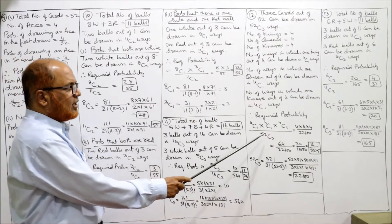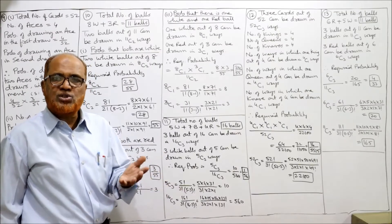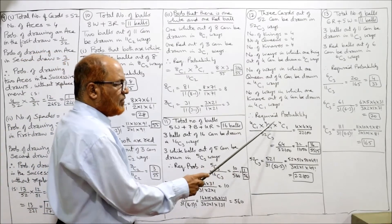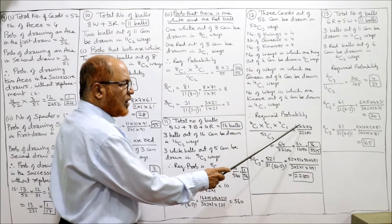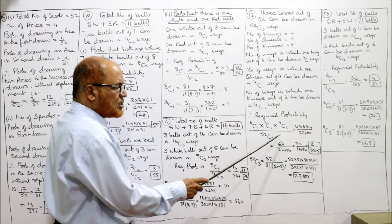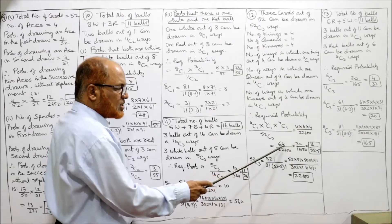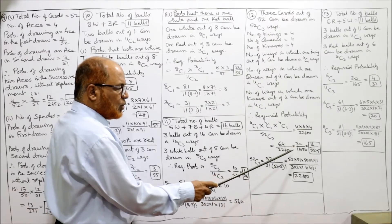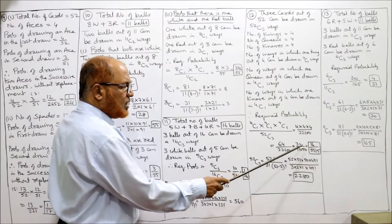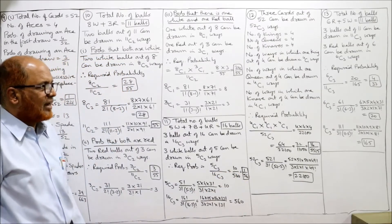52C3 = 22,100. And 4C1 = 4. So numerator = 4 × 4 × 4 = 64. Probability = 64/22,100. Simplifying: 16/5525. How was 52C3 calculated? 52C3 = 52!/(3! × 49!) = (52 × 51 × 50 × 49!)/(6 × 49!) = 132600/6 = 22,100. So the required probability is 16/5525.